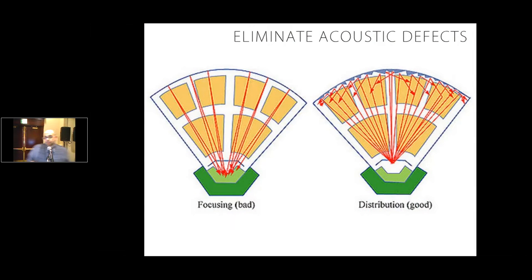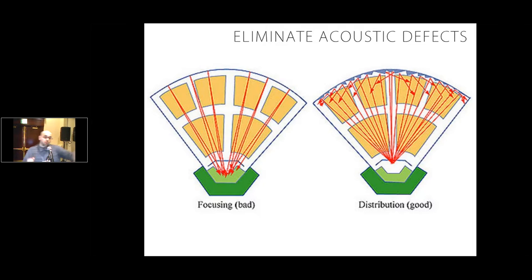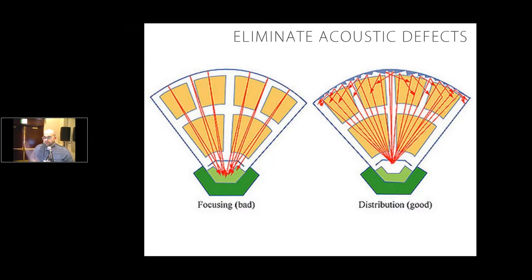Another design goal is to eliminate acoustic defects — anything that takes away from the acoustic goals in the space. One of the primary ways we can get defects is through focusing: just like a curved mirror would focus light, curved surfaces focus sound. On the left-hand side I have a plan view of a space where the back wall is curved, and energy incident on that wall will be reflected into a focused pattern — undesirable because you want a uniform acoustic experience throughout the space. One way to alleviate this is through diffusion or changes in geometry to move away from flat surfaces. This is actually my primary area of research.